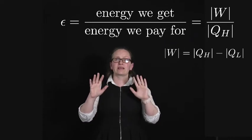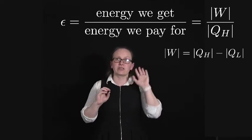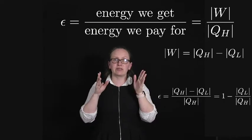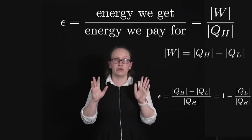And so we can substitute that into our equation for efficiency. So the efficiency is equal to the absolute value of QH, minus the absolute value of QL, divided by the absolute value of QH.